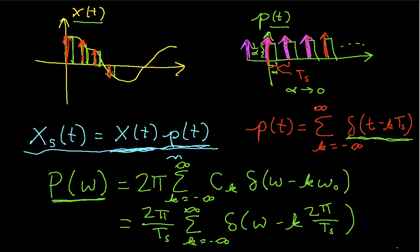So now we have the expression for p of omega. Unfortunately I'm running out of time, so in the next video we'll go to the frequency domain. We know that in the time domain we're multiplying x and p, so in the frequency domain that's going to be a convolution. We'll actually perform that convolution and then see what this implies for our sampling theorem. We'll start in the next video there. Thank you.